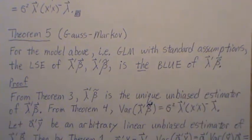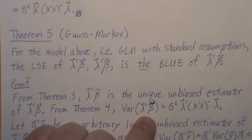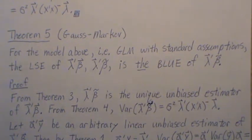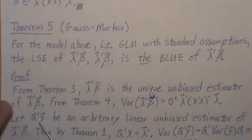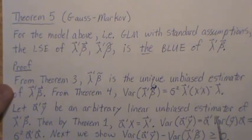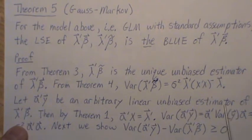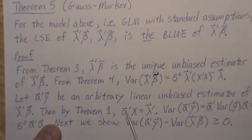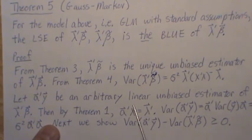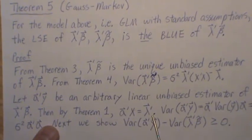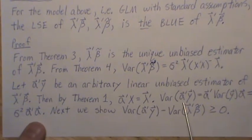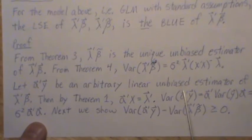If it were beta, it's a constant, then it's zero. So it has to be an estimator to have a variance. Let a prime y be an arbitrary linear unbiased estimator of lambda prime beta. Then from Theorem 1, we know an a exists such that a prime X equals lambda prime.